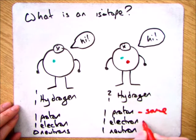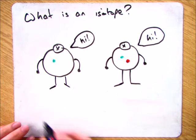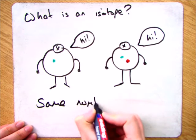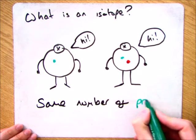So straight away you can see that two things are the same and one is different. Now when we focus on the definition then what we're talking about is actually the number of protons that are the same.